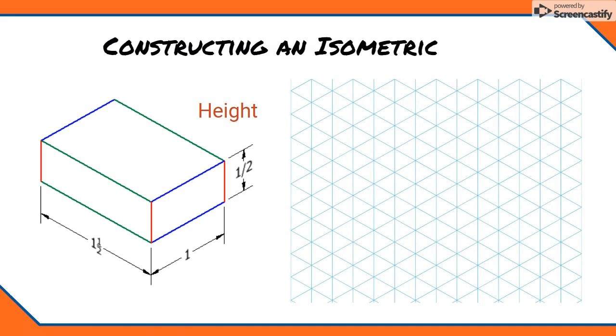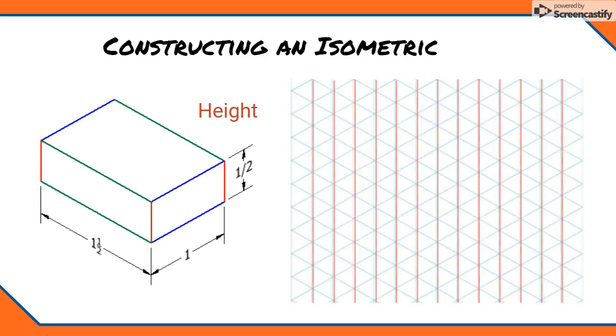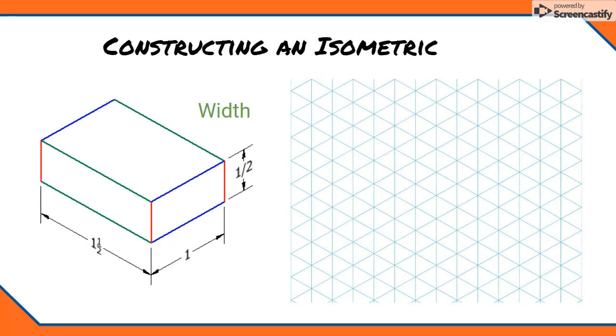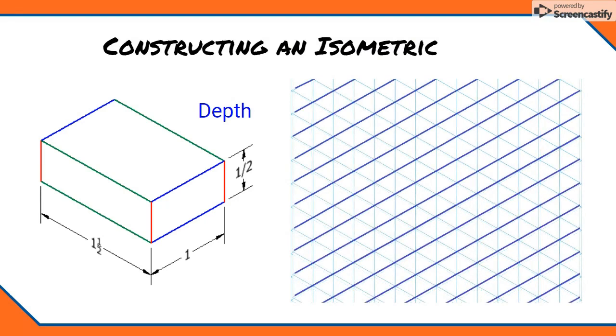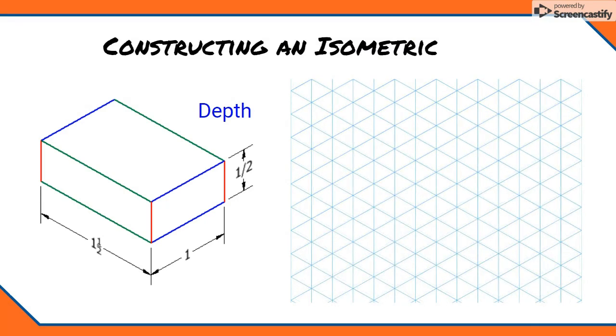To make things easier, the shape is constructed on an isometric grid. Isogrid gives us the three angles that we use for isometric drawings, including vertical lines for our height lines, 30 degree lines traveling to the left for our width lines, and 30 degree lines traveling to the right for our depth lines. As long as our part has rectangular surfaces, we will always be following one of these three lines.